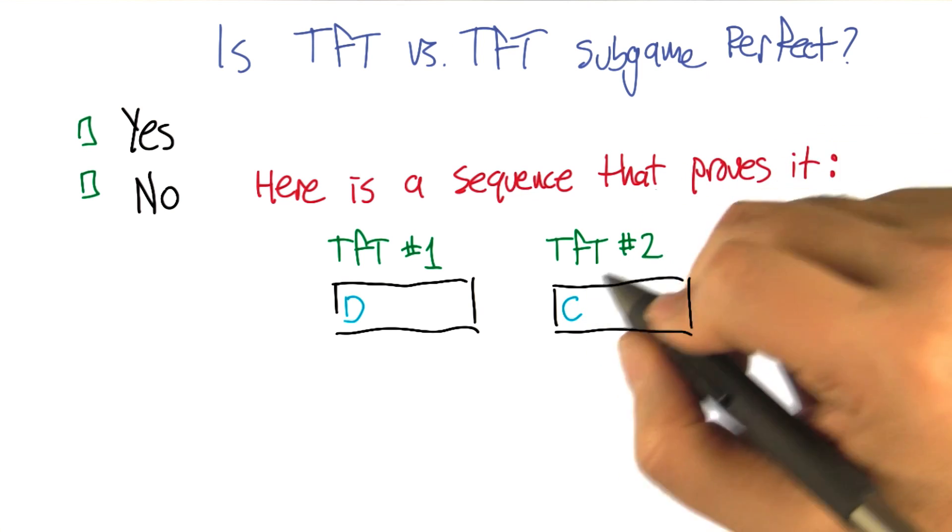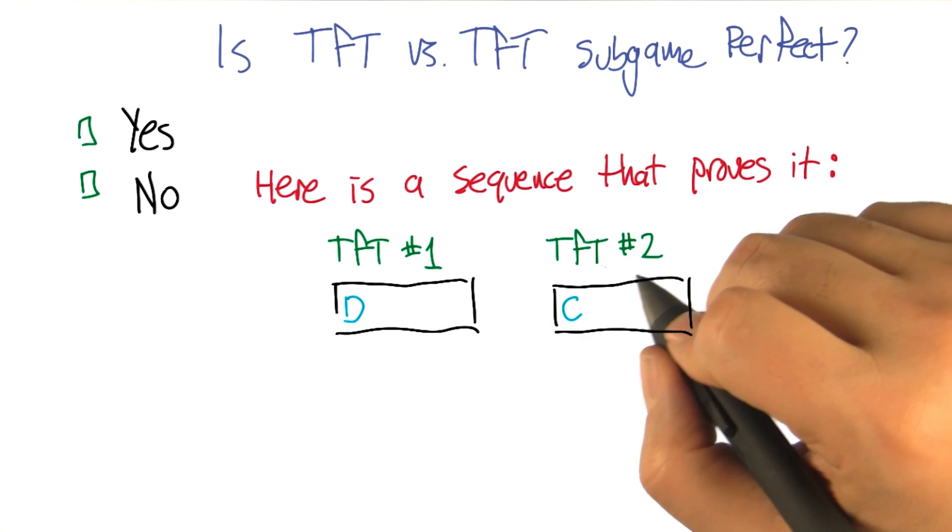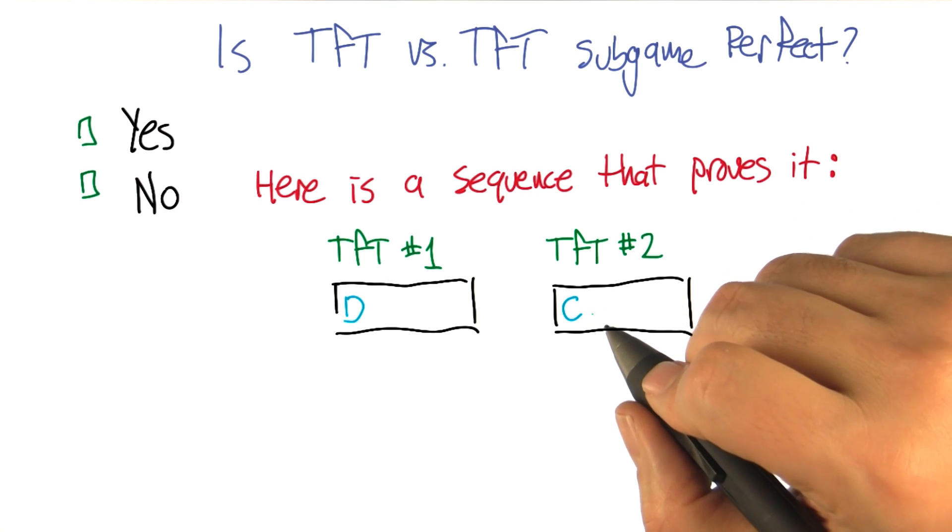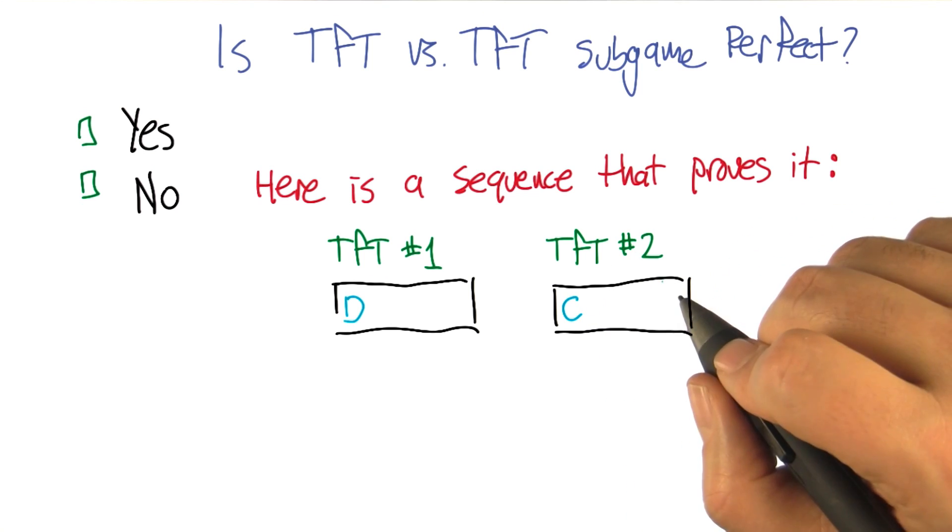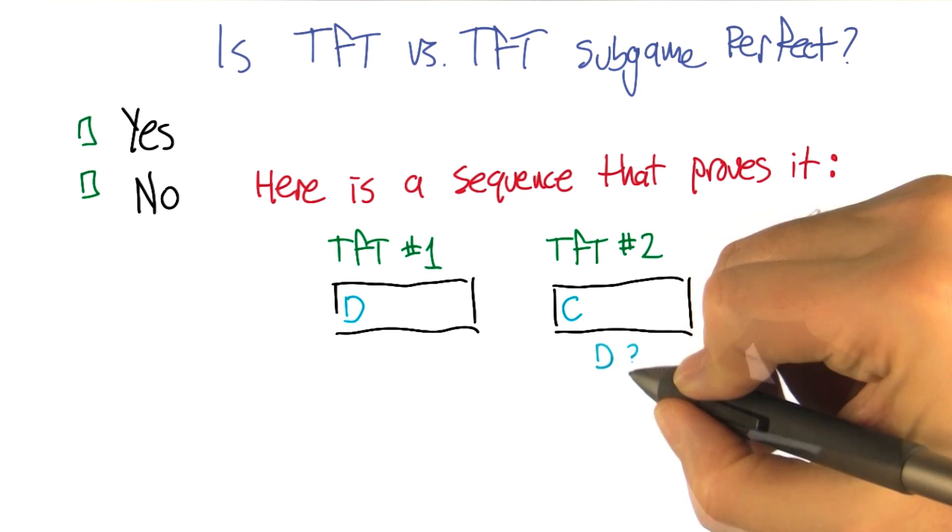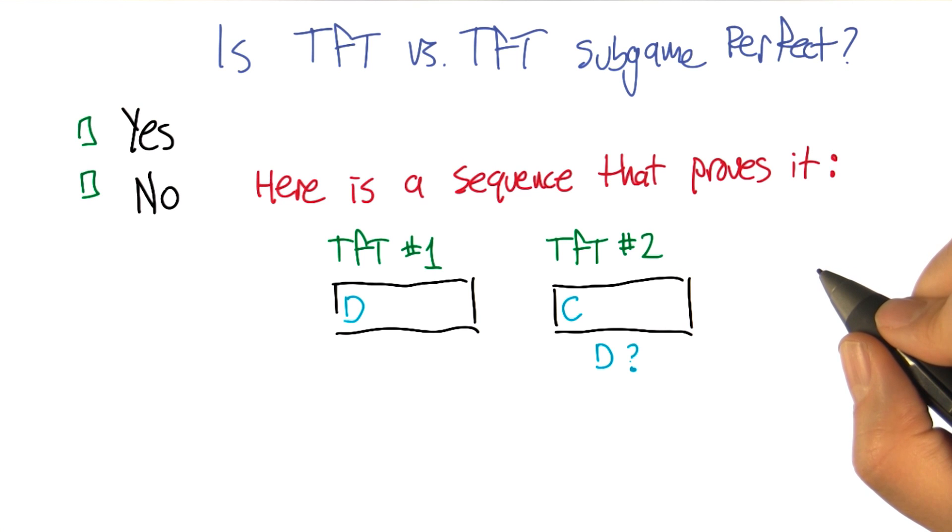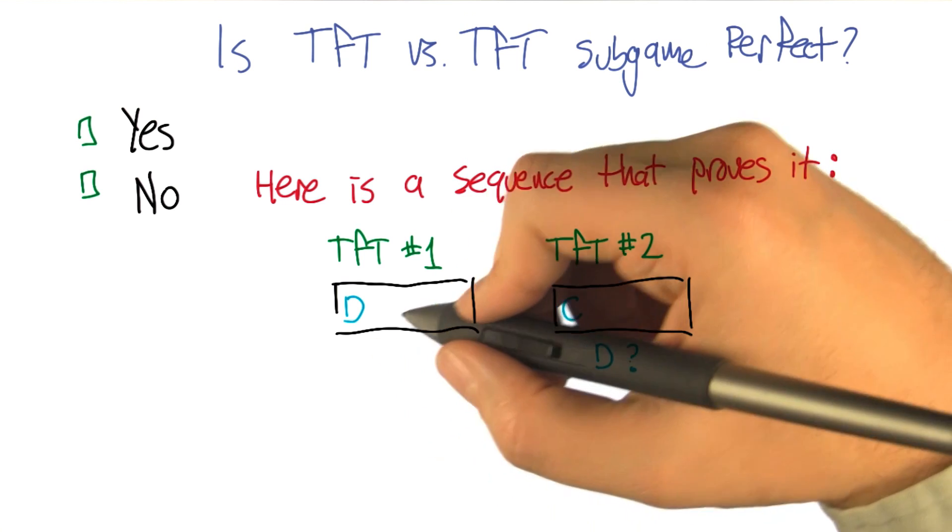Well, I mean, so we can feed it anything we want. So we could tell tit for tat two to cooperate. It's sort of like we've taken over its brain for a brief amount of time. So I'm not yet convinced it's going to matter for this. But the thing is that from that point on, tit for tat two is going to want to, for the next step, tit for tat two is going to want to defect. That's right. And tit for tat one would want to cooperate.